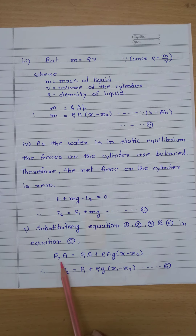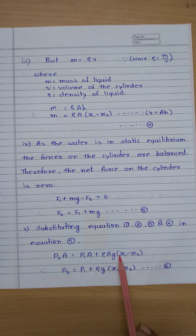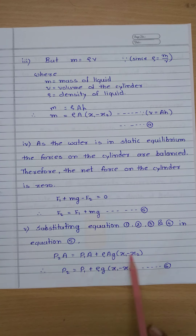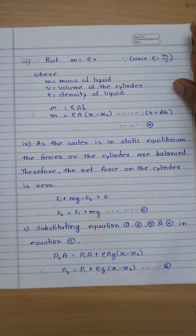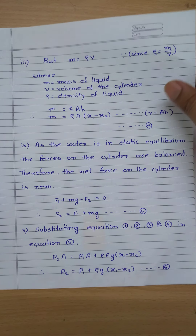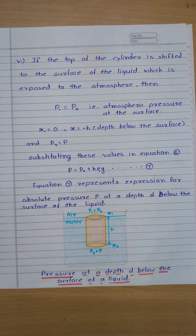After substitution and simplification, p2·A is equal to p1·A plus rho·A·g·(x1 minus x2). Cancelling A, we get p2 is equal to p1 plus rho·g·(x1 minus x2) — equation number six.